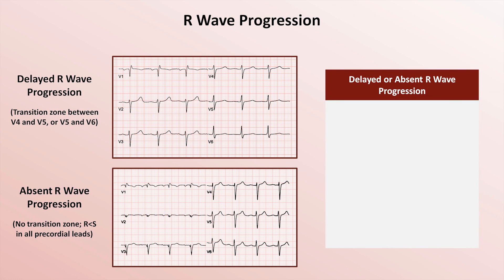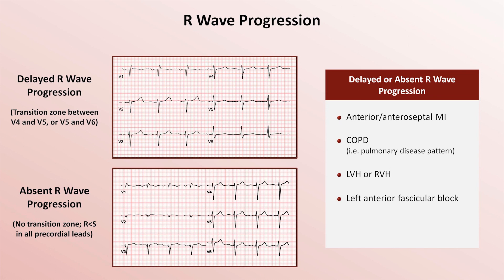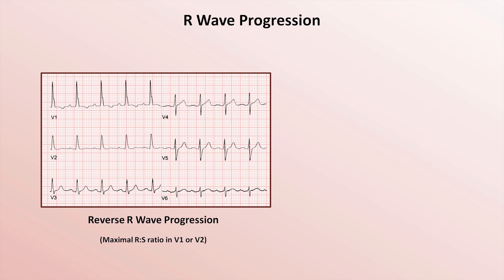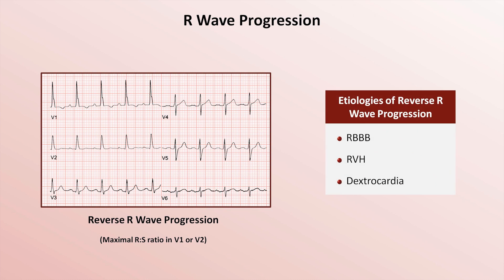Etiologies of delayed or absent R-wave progression include subacute or old anterior or anteroseptal MI, manifestation of the pulmonary disease pattern seen in COPD, LVH or RVH, left anterior fascicular block, or electrode misplacement — specifically electrodes V3 through V6 being placed too medially. Another form of abnormal R-wave progression is called reverse progression, in which the maximal R-to-S ratio occurs in either V1 or V2. Aside from right bundle branch blocks, this is otherwise rare, with other etiologies essentially limited to certain subtypes of RVH and dextrocardia.